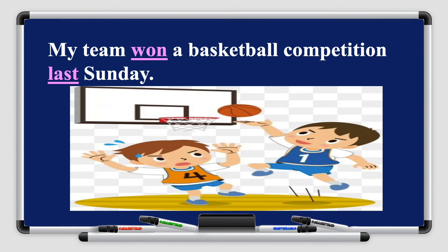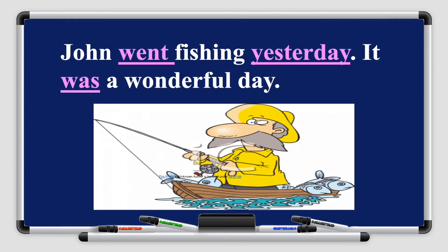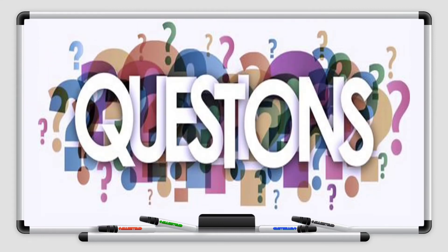Another example: 'John went fishing yesterday. It was a wonderful day.' The verb 'went' is in the past simple tense. We have 'yesterday' indicating the past, and 'was' also indicating this happened in the past. Now we've revised the affirmative sentences in the past simple tense, and now we're going to revise how to ask questions.